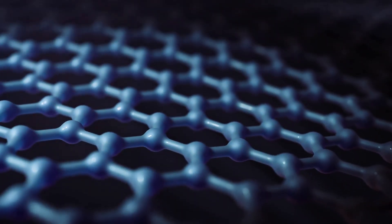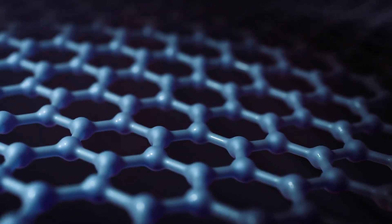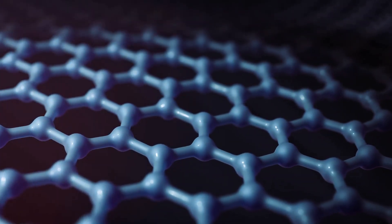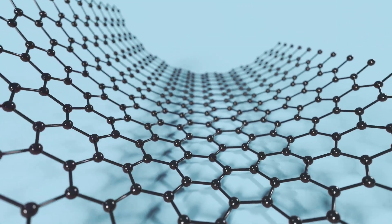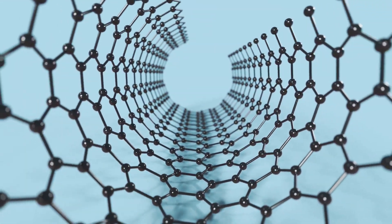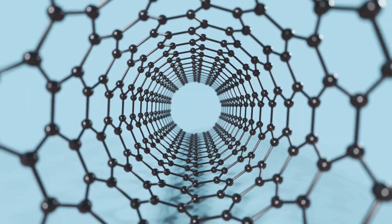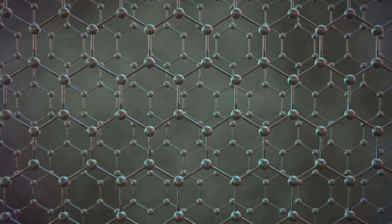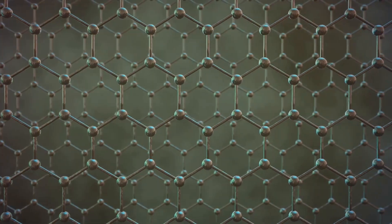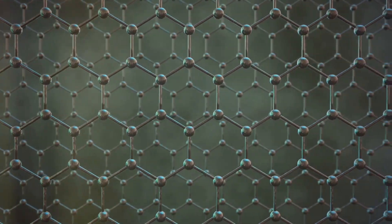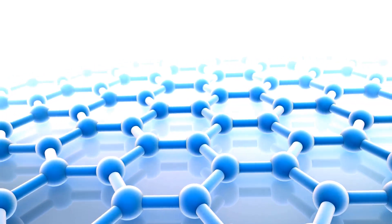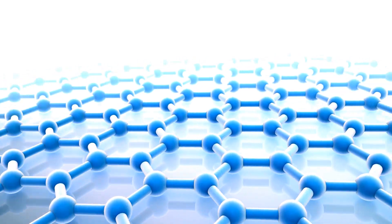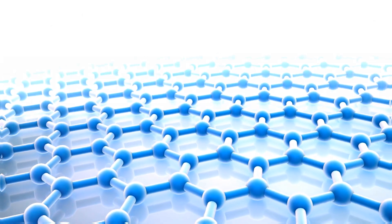Graphene is a single layer of carbon atoms arranged in a two-dimensional honeycomb lattice structure. It is considered a derivative of graphite, where the carbon atoms are bonded together in a planar configuration, resulting in remarkable properties such as exceptional electrical conductivity, mechanical strength, and thermal conductivity. These characteristics make graphene a material of great interest across various applications, including electronics, energy storage, and sensors.